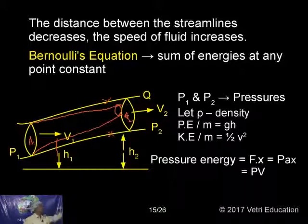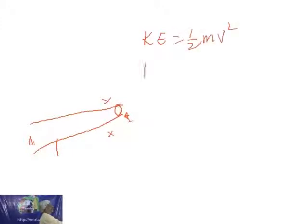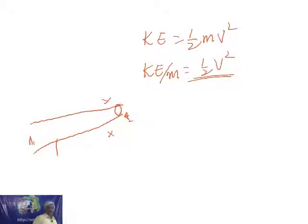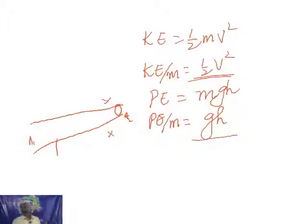What is the total energy? The total energy means: first, kinetic energy formula is half mV squared. Kinetic energy per unit mass is simply half V squared. Similarly, potential energy related to height is mGH. Potential energy per unit mass is simply GH.